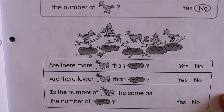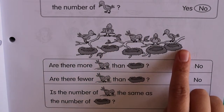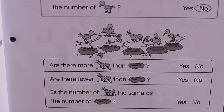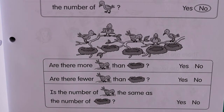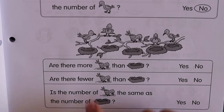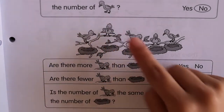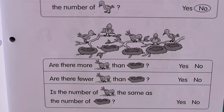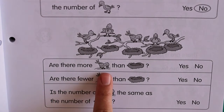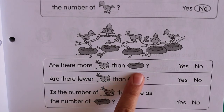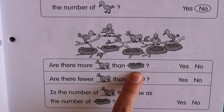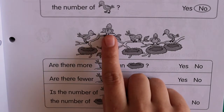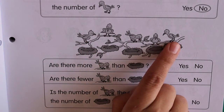Birds and nests. What are you going to start with? You're going to match them — use a pencil and give each bird a nest. Then we answer the questions. Are there more birds than nests? We need to count so we can answer. Let's count the birds: one, two, three, four, five.